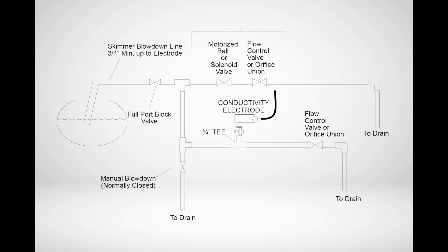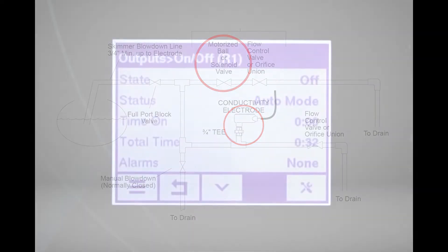Very large boilers may be plumbed with a small continuous blowdown that passes the conductivity sensor. When the conductivity reading increases above the set point, a valve in a second larger line will be directed to open on a larger blowdown line. For these installations, the relay wired to the blowdown valve only needs to be programmed with a simple on-off set point with a dead band.